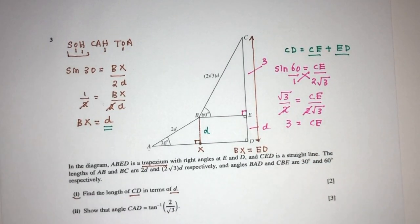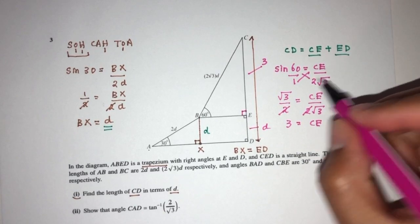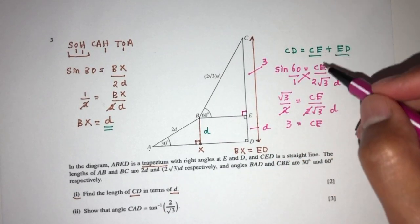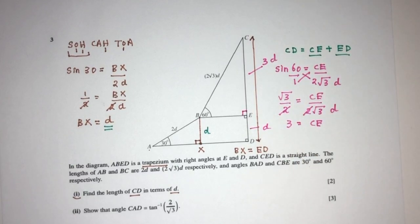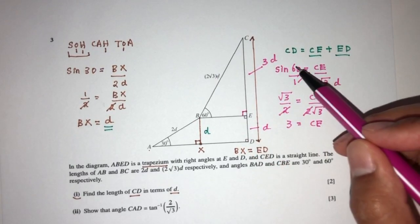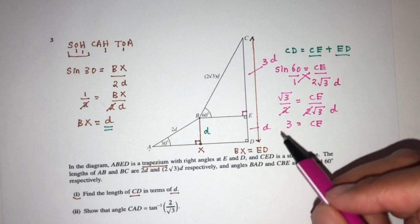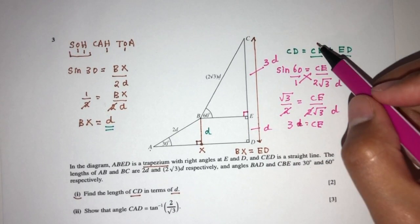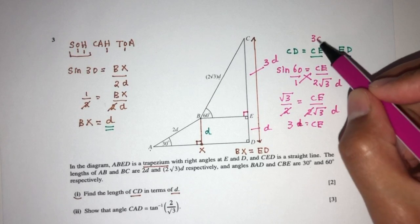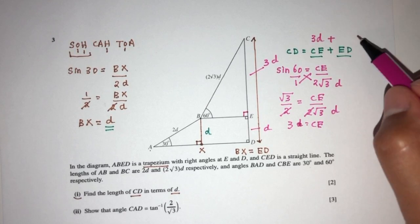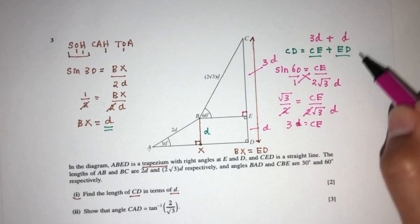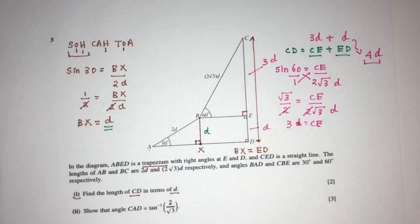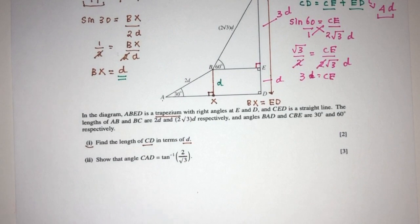I think I was missing the D earlier. With the D included, CE will be 3D and ED will be D. So the length of CD equals CE plus ED, which is 3D plus D, giving us 4D. That is the answer for part one — CD equals 4D in terms of D.